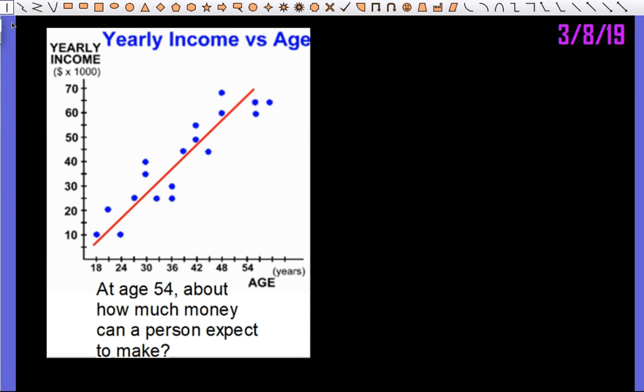When you are given scatterplots, you are able to possibly make predictions, meaning you should be able to expect how much money a person can make at age 54.